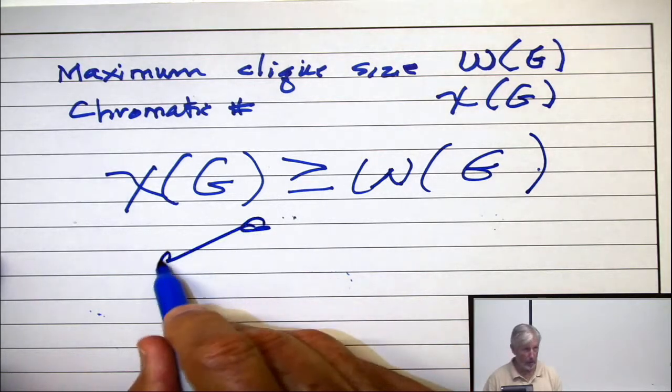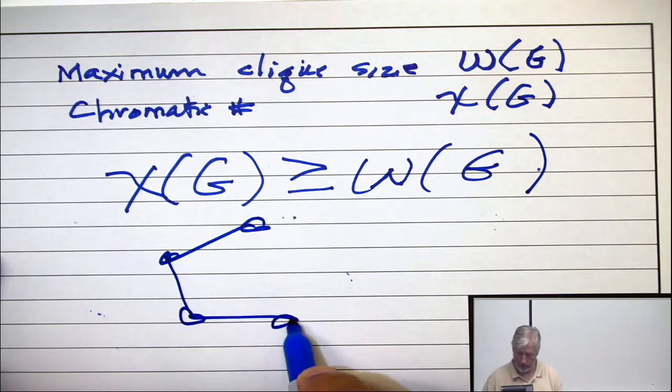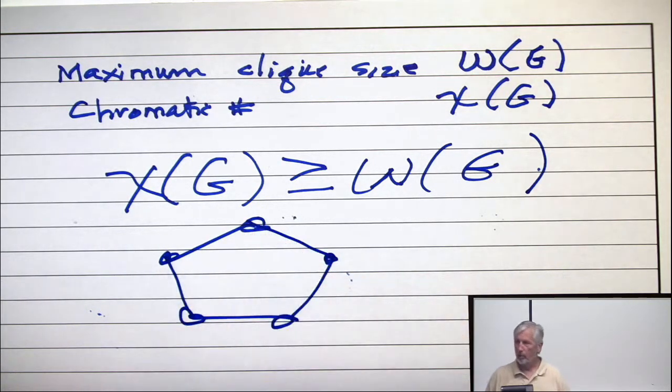And in 30 seconds, what is omega? 2. The largest clique has size 2. What is chi?